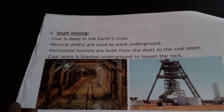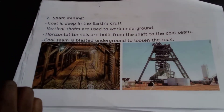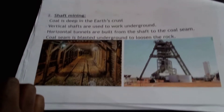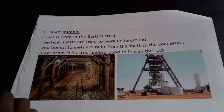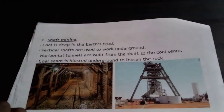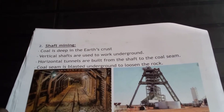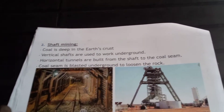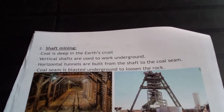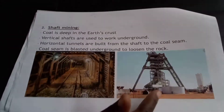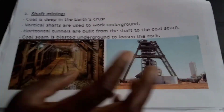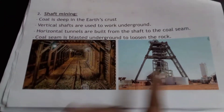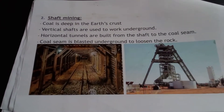Shaft mining is when we go deep underground using vertical shafts to work underground. Horizontal tunnels are built from the shaft to the coal seam. The coal seam is blasted underground to loosen the rock and then extract the material. This is the machinery used to go underground for miners to extract the coal deep underground.